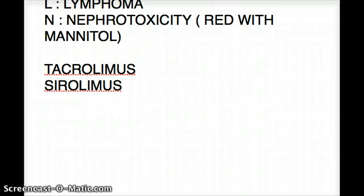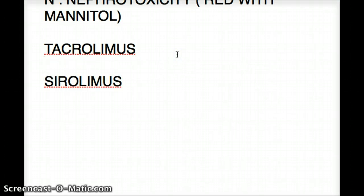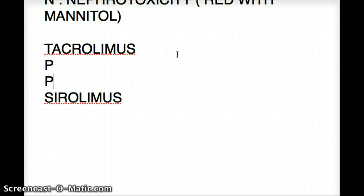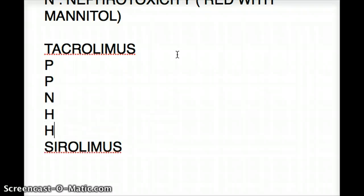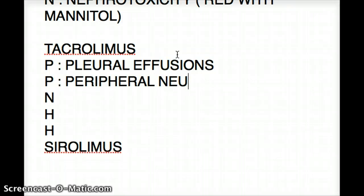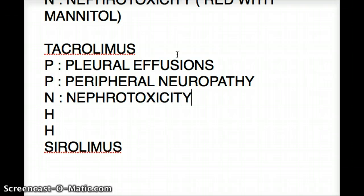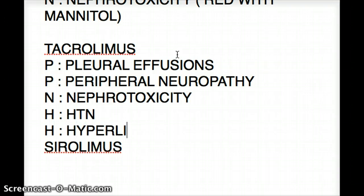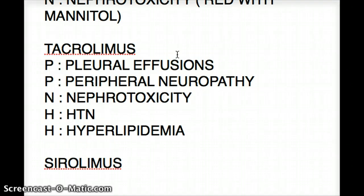For tacrolimus, there are five toxicities remembered as PPNHH. The first P is pleural effusions, the second P is peripheral neuropathy, N is nephrotoxicity, the first H is hypertension, and the second H is hyperlipidemia. So tacrolimus also causes nephrotoxicity.